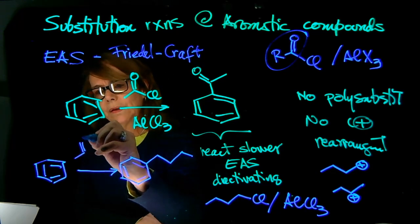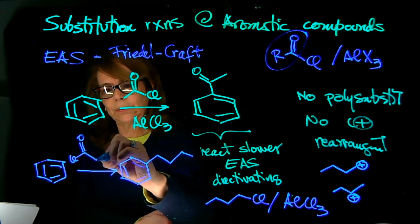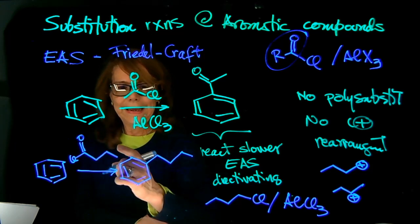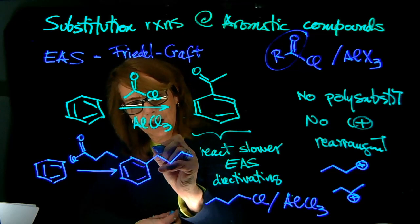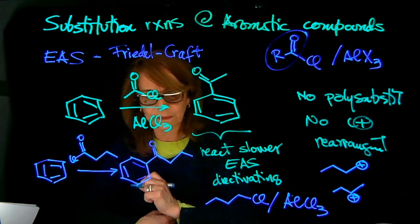So I cannot go and directly do the Friedel-Craft alkylation, but instead I can do an acylation. Same number of carbons, and you will do one, two, three, and four. And in that case, now you will do, this is your installing that group.